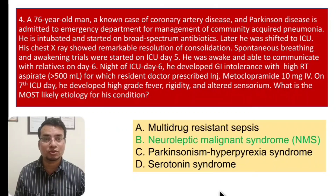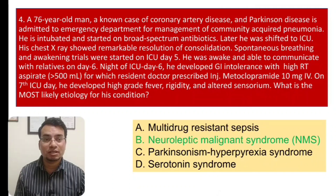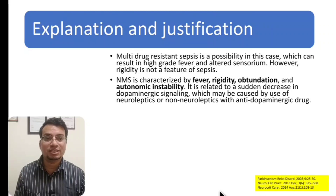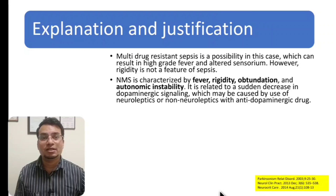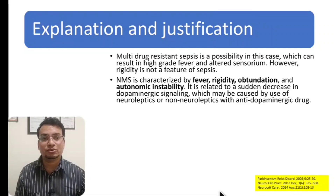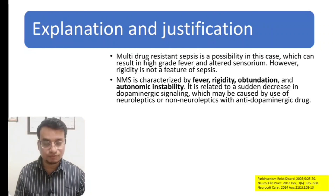The options are: multi-drug resistant sepsis, neuroleptic malignant syndrome, Parkinson's hyperpyrexia syndrome, or serotonin syndrome. The answer is neuroleptic malignant syndrome (NMS). The patient has Parkinson's disease and probably had not received his Parkinson's medications during the ICU stay; additionally he was given metoclopramide, a D2 antagonist, which likely precipitated NMS. Multi-drug resistant sepsis is possible given the fever and altered sensorium, but rigidity is not a feature of sepsis, so that option is ruled out. NMS is characterized by fever, rigidity, obtundation, and autonomic instability.